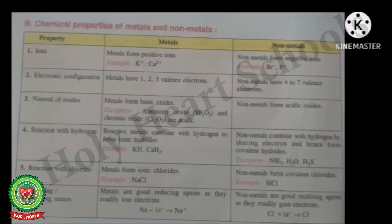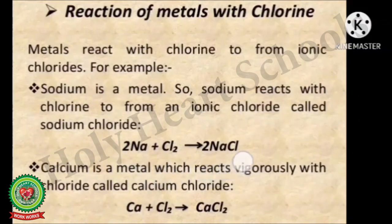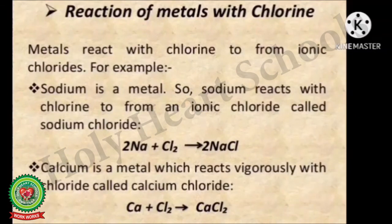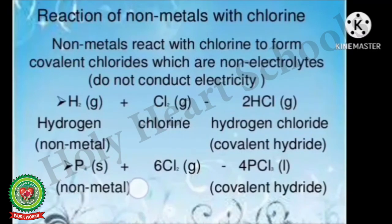The next chemical property is reaction with chlorine. Metals form ionic chlorides — for example, NaCl — and non-metals form covalent chlorides — for example, HCl. Sodium reacts with chlorine to form sodium chloride (ionic chloride). Calcium reacts with chlorine to form calcium chloride. Non-metals react with chlorine to form covalent chlorides, which are non-electrolytes and do not conduct electricity. For example, hydrogen reacts with chlorine to form hydrogen chloride (HCl), and phosphorus reacts with chlorine to form phosphorus chloride.